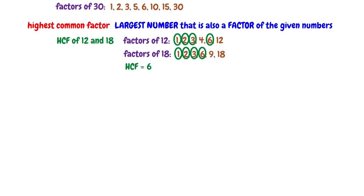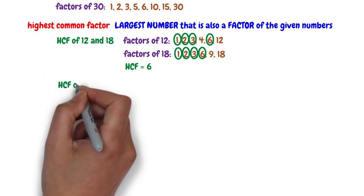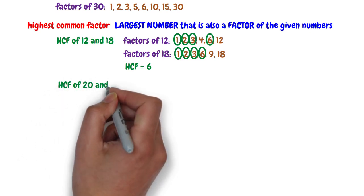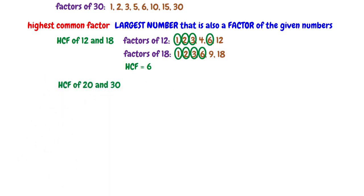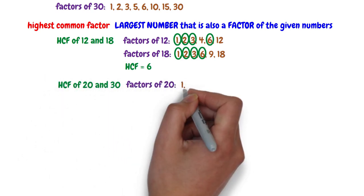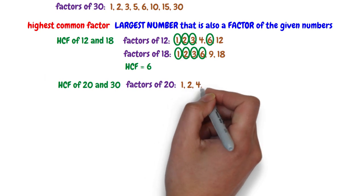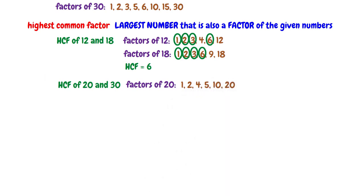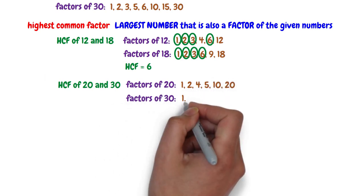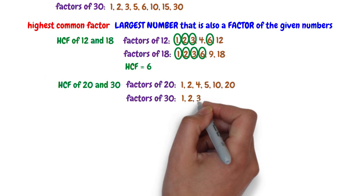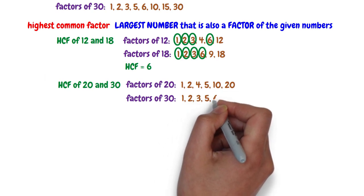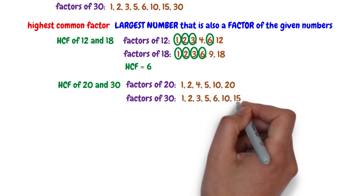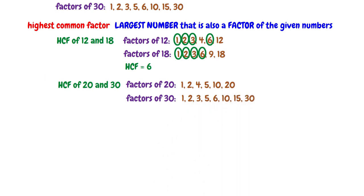Another example: what is the highest common factor of 20 and 30? The factors of 20 are 1, 2, 4, 5, 10, and 20, while the factors of 30 are 1, 2, 3, 5, 6, 10, 15, and 30.